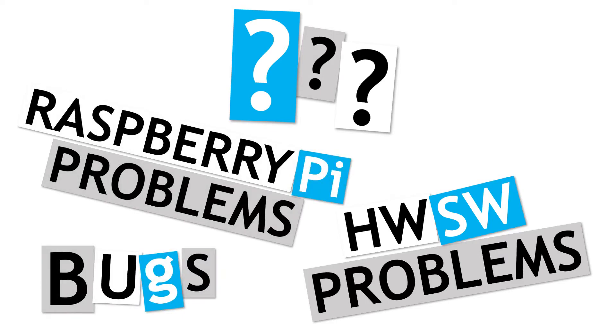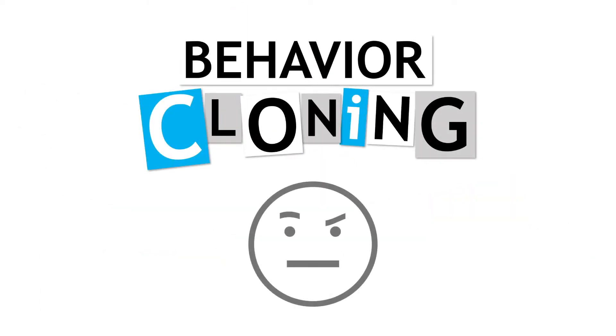Well, as it turns out, this is actually the expected result with behavior cloning. There's a subtle mismatch between conditions during training and those during autonomous driving, which we haven't really considered.